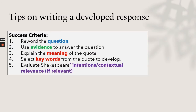The final section introduces tips on writing a developed response. This is not necessarily a structure, just something to consider and include if you struggle with developing your response. Number one: try to reword the question so you are always referring back to it. Number two: use evidence to answer the question. Number three: explain the meaning of the quote. Number four: select keywords from the quote to develop. Number five: evaluate Shakespeare's intentions and contextual relevance where relevant. Pause the video and get these down.